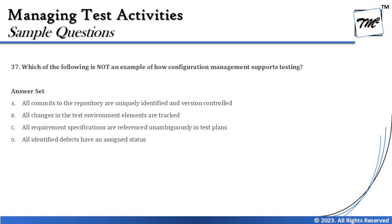Moving on to question 37: which of the following is NOT an example of how configuration management supports testing? We have been discussing this in every series of this ABC set. Configuration management talks about identification, version control, traceability, and history management — four important things.